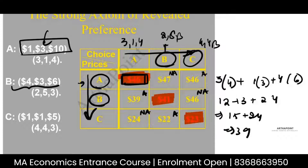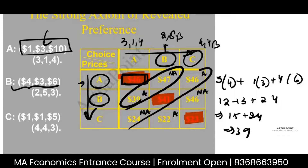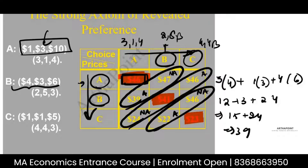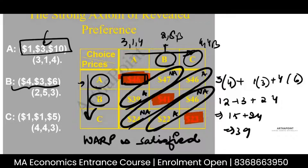Do you see any diagonals getting circled? No. If I look here, affordable and affordable are not coming together on the opposite diagonals — we don't have two A's (affordables) together in any off-diagonal pair. In that sense, I can say WARP is satisfied. When A was chosen, C was affordable — but when C was chosen, A was not affordable. When B was chosen, A was affordable — but when A was chosen, B was not affordable. So WARP is satisfied.